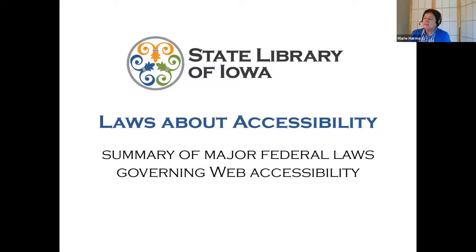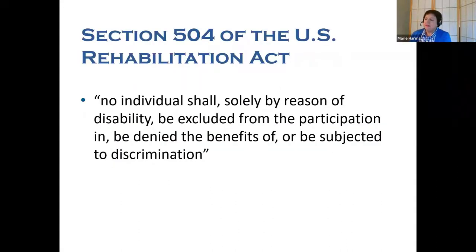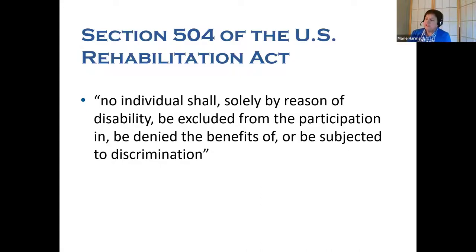Although making our web pages accessible should be motivated by a desire to make our libraries available and welcoming to all, regardless of ability level, there are some laws that affirm the rights of disabled people to access our programs and define our responsibilities to make our programs available. Here's a summary of major federal laws governing web accessibility for us. Section 504 of the U.S. Rehabilitation Act establishes that no individual shall, solely by reason of disability, be excluded from the participation in, be denied the benefits of, or be subjected to discrimination under any program or activity conducted by a federal agency or institution receiving federal assistance.